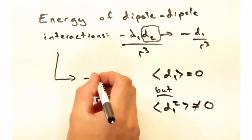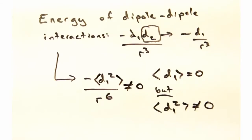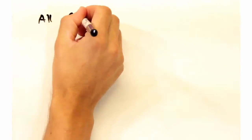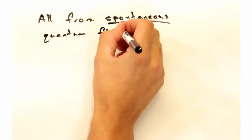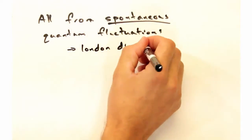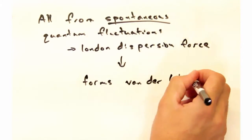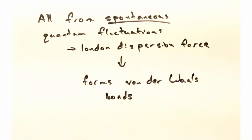But the time average of the dipole squared is not zero. No, it's not, which means that the energy of this interaction is also non-zero. And that's all from spontaneous quantum fluctuations? Indeed, and we call this the London dispersion force, which forms what we call van der Waals bonds. It's the most spontaneous and general of all dipole-dipole interactions.